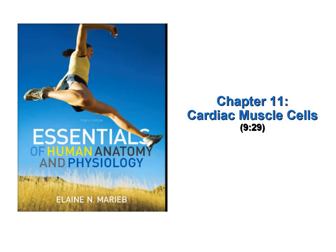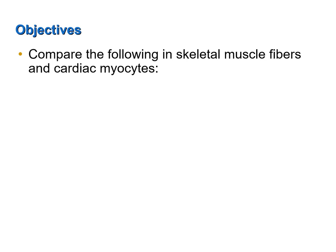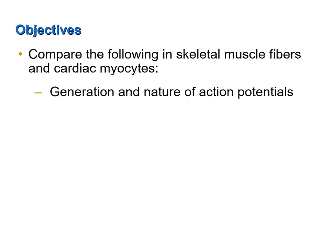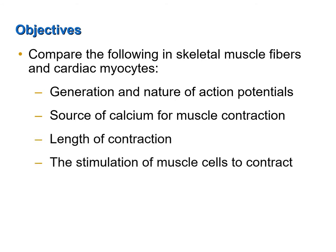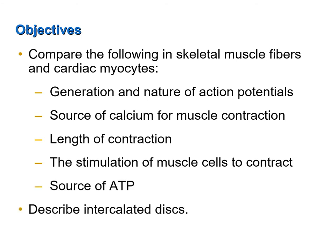Cardiac muscle cells is the topic of this screencast. You may find information on cardiac muscle cells in Chapter 11 of your textbook. This screencast was designed to achieve the following objectives: compare the following in skeletal muscle fibers and cardiac myocytes — generation and nature of action potentials, source of calcium for muscle contraction, length of contraction, the stimulation of muscle cells to contract, and the source of ATP. Lastly, describe intercalated discs.